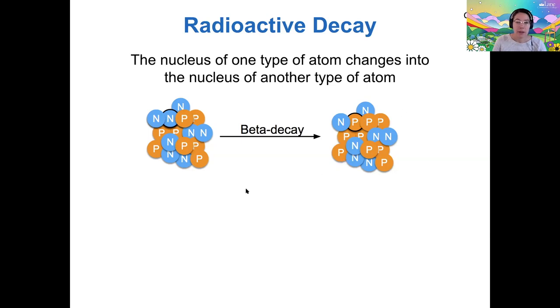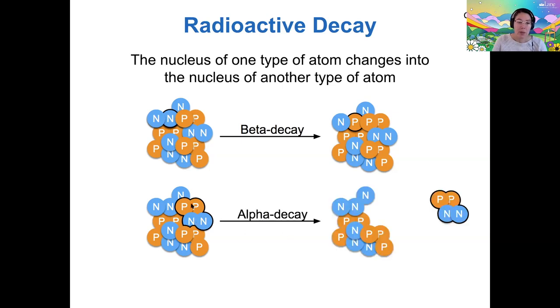This is a process called beta decay. And the other thing that can happen is that essentially a nucleus can spit out a collection of two protons plus two neutrons, we call that an alpha particle helium-4. So because we call that an alpha particle, we call this alpha decay.